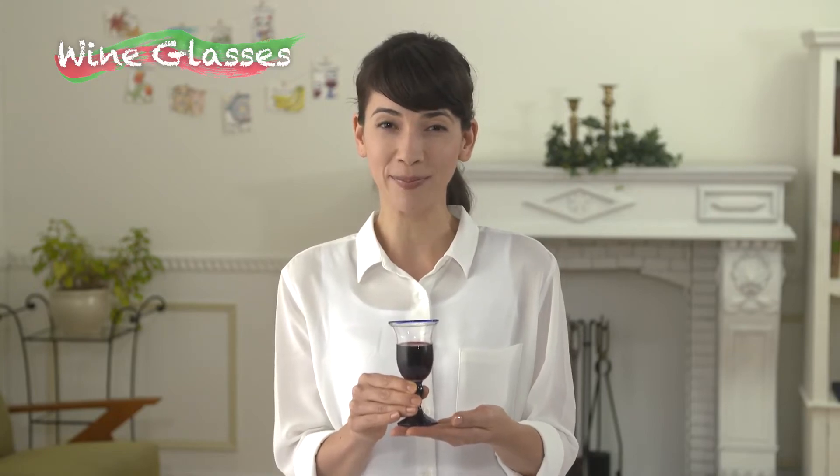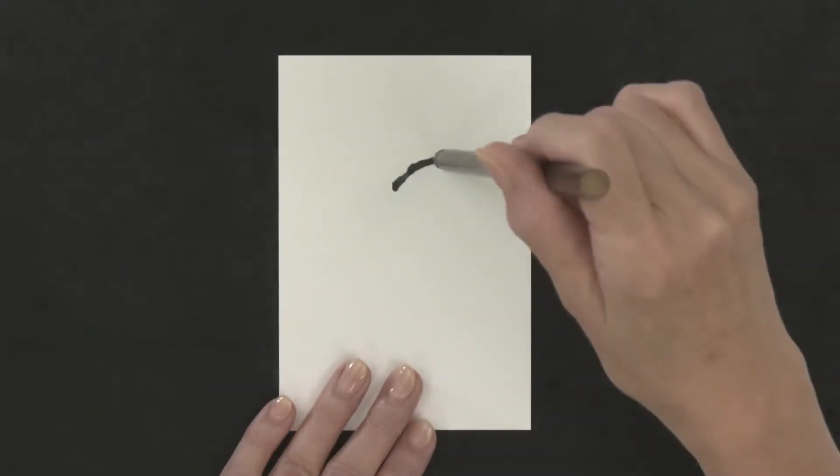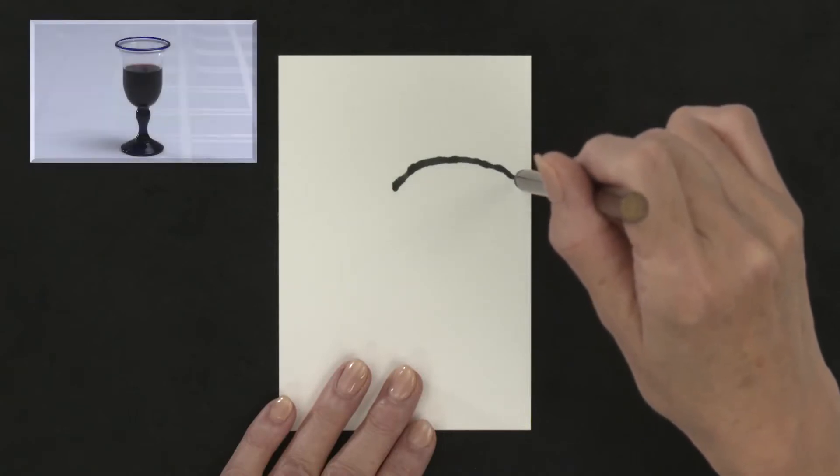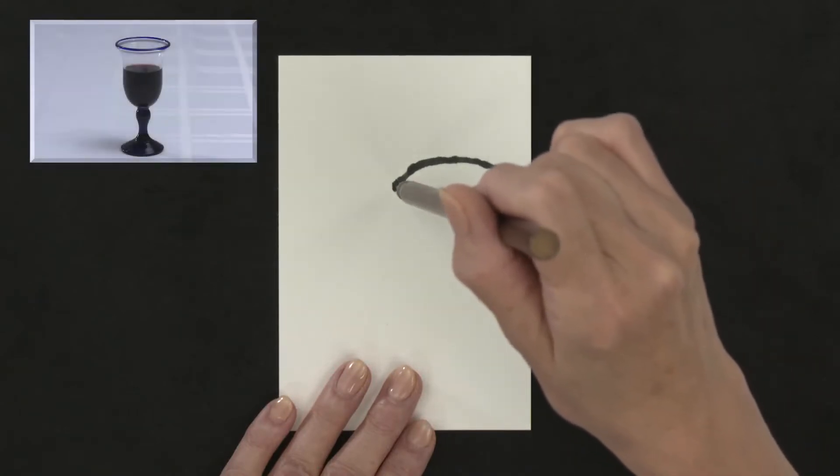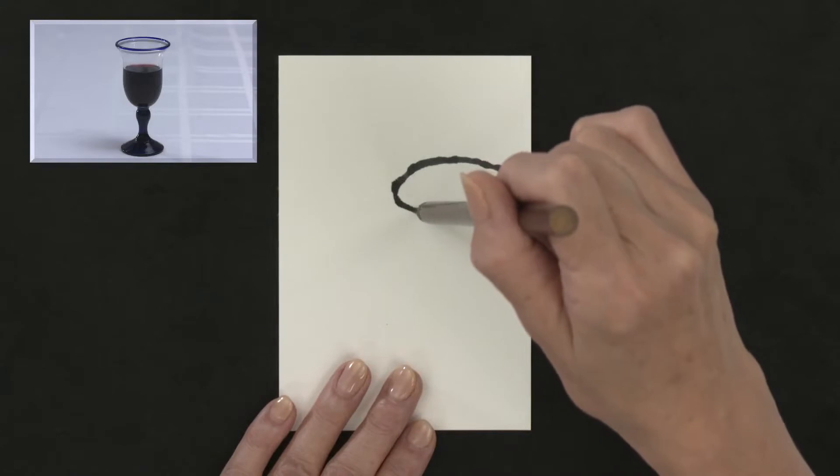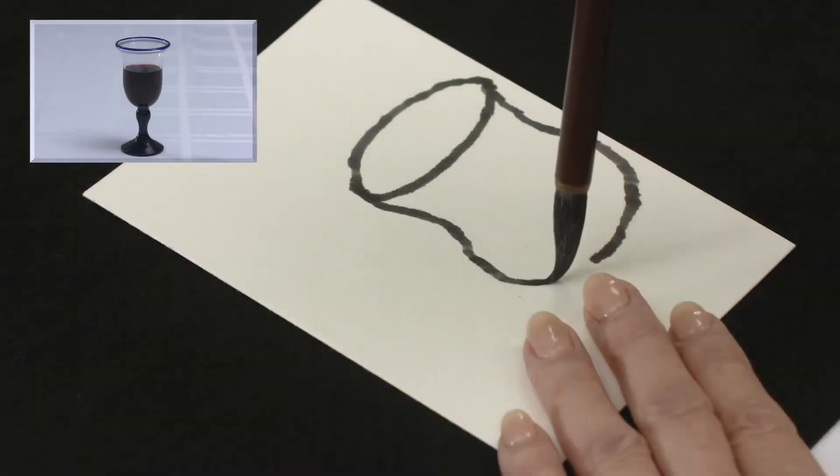This etegami can be used for times when you'd like to congratulate someone. Think about where you want the message to be and draw the outline of the glass with the ink-soaked ink brush.